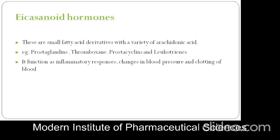Next are eicosanoid hormones. These are arachidonic acid derivatives with a variety of paracrine activity. Examples include prostaglandins, thromboxane, prostacyclin, and leukotrienes. Their functions include the inflammatory response, changes in blood pressure, and clotting of blood. Thank you.